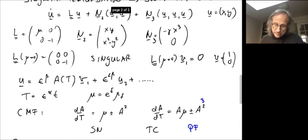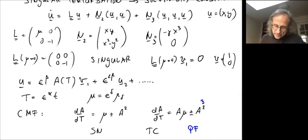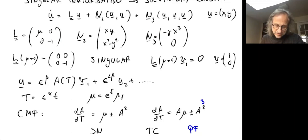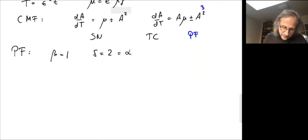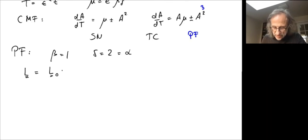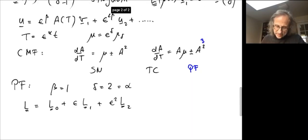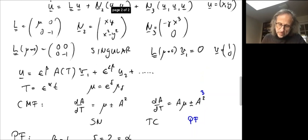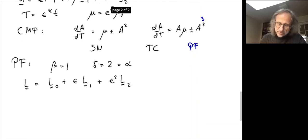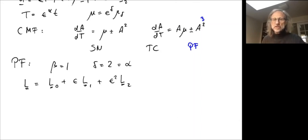Having said that, we can now proceed and do the expansion. We've already expanded u. We have N2 and N3. What we haven't done is that L depends on mu, and therefore also depends on epsilon. So L is expanded as L0 (for mu equals zero), plus possibly epsilon·L1, plus epsilon squared·L2. In our case, since mu is of order epsilon squared, we have L0 and L2 but no L1 — L1 is zero for us.